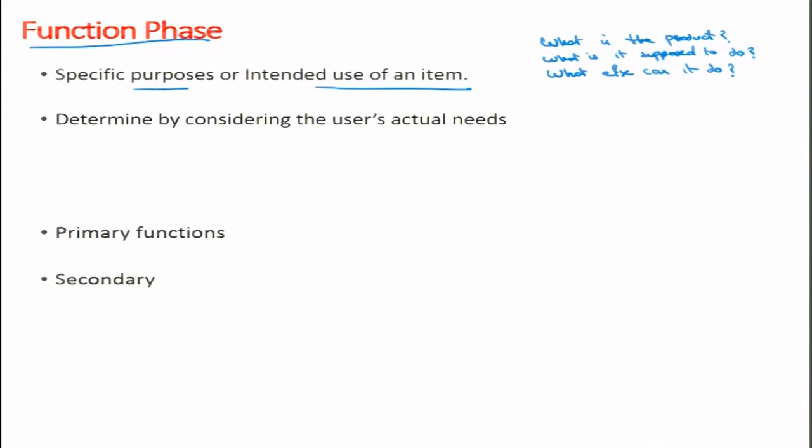These are the questions asked to identify the function of the product. When thinking green, could the duster be made of a different material — perhaps compostable or biodegradable instead of plastic? Those ideas come in the creativity phase and evaluation phase. In the function phase, we are only identifying functions. In the evaluation phase, we will have criteria based on energy, material, and pollution, and in the creativity phase we will develop ideas for eco-friendly alternatives.